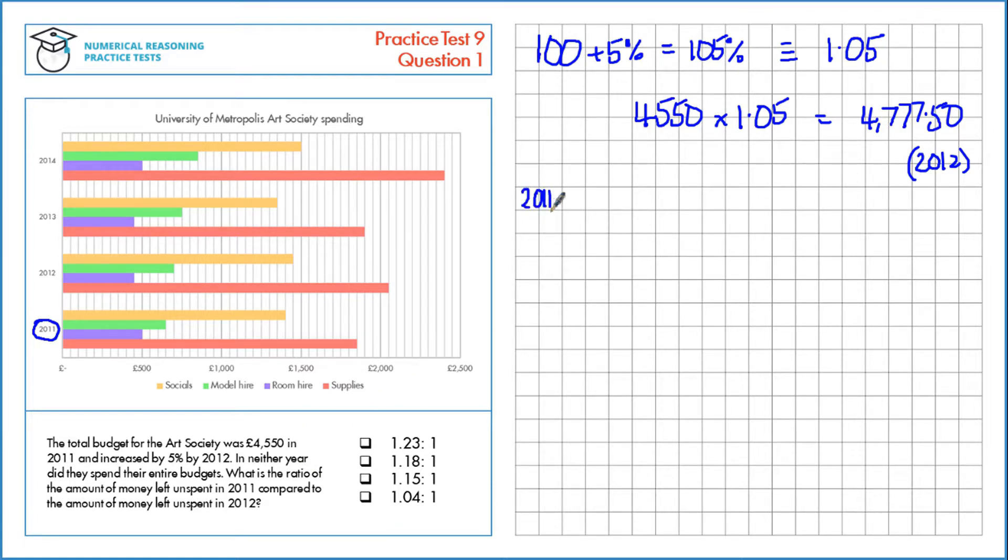So 2011, £4,550, and then we're going to just add up all of this here and then subtract it, and we'll do the same thing for 2012.